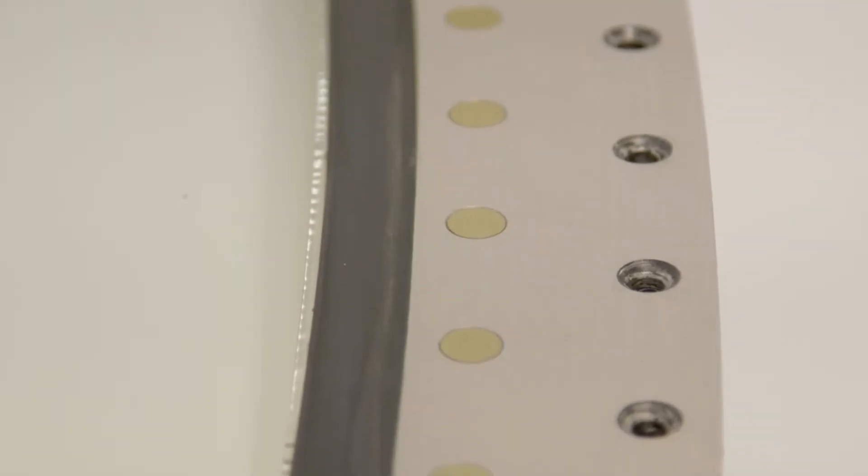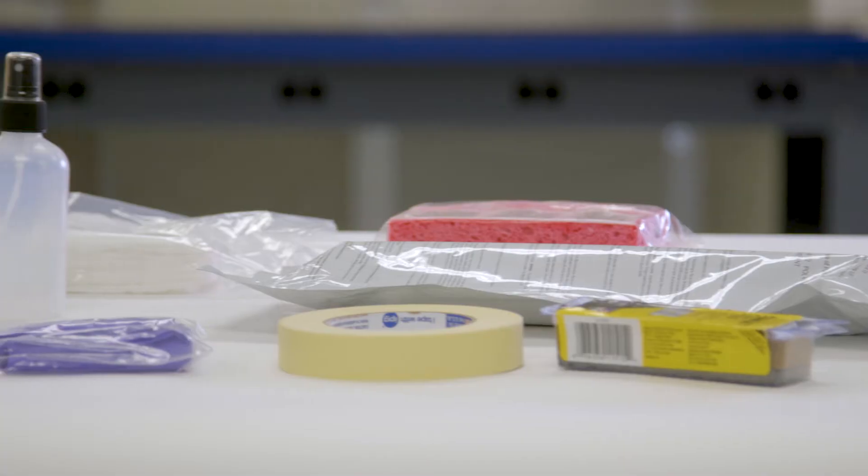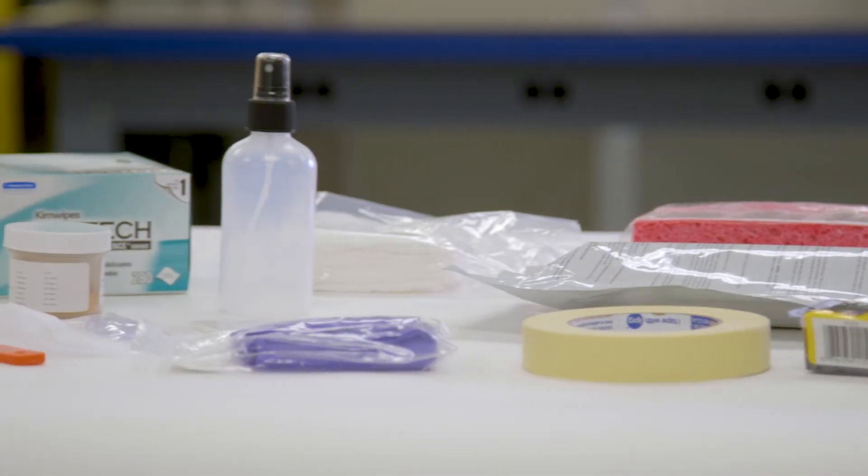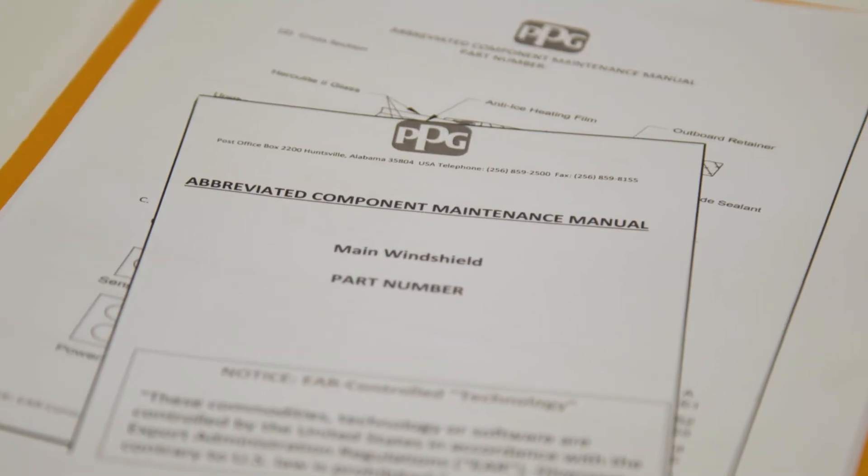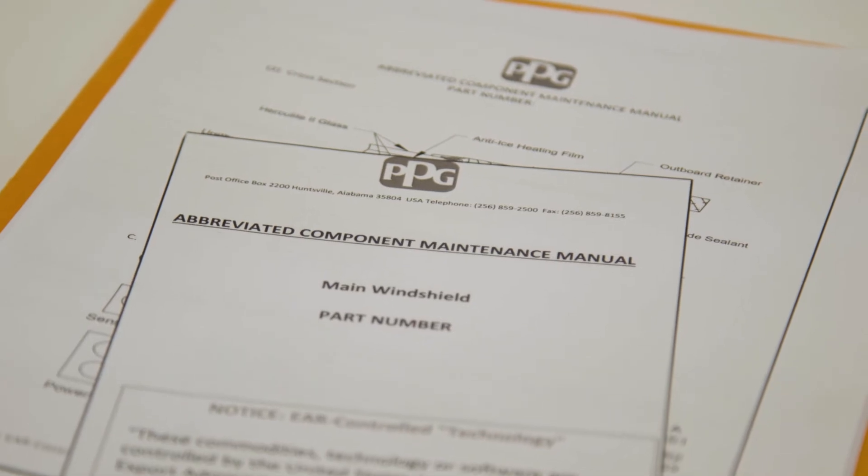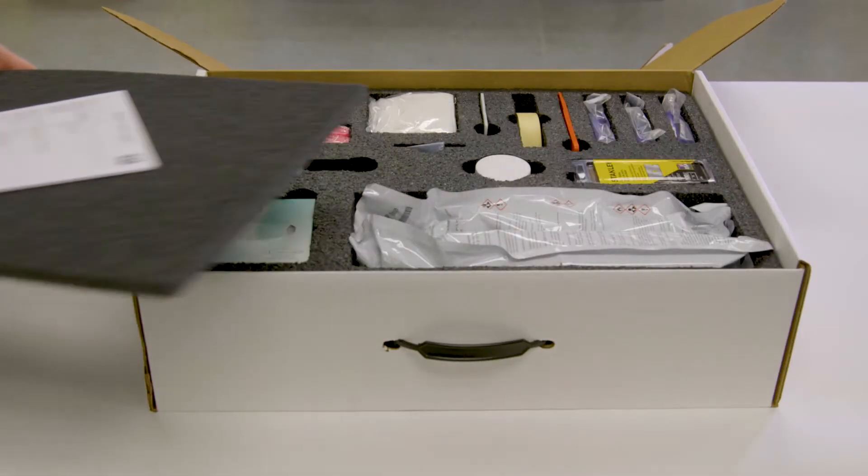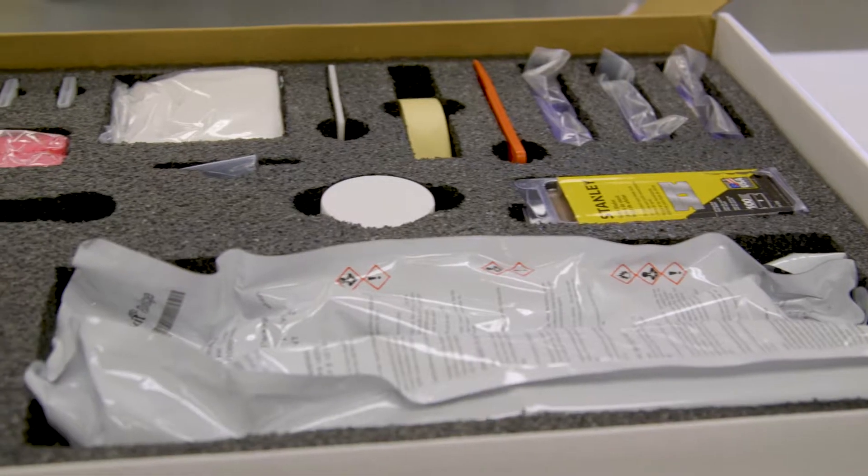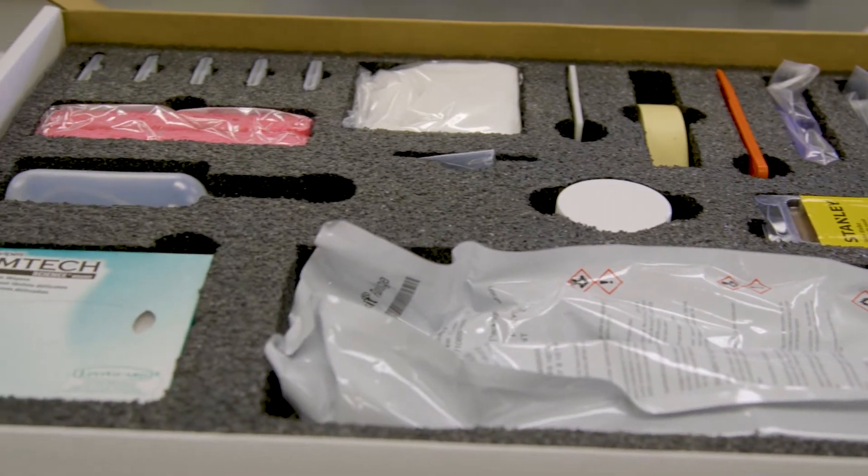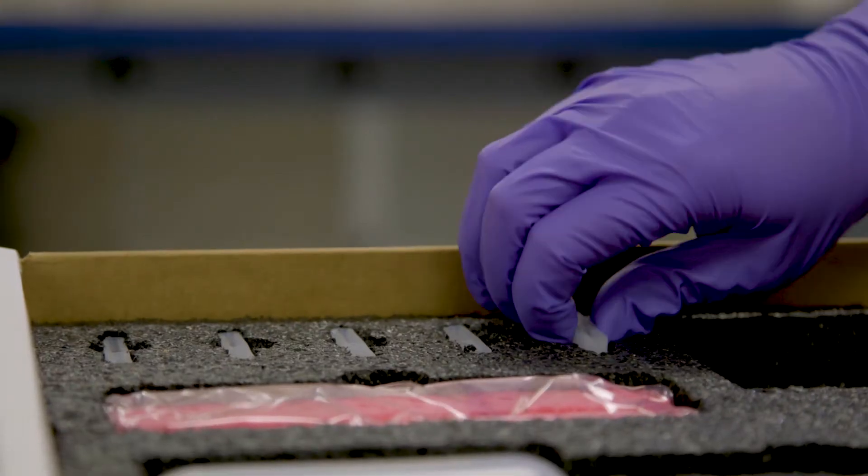To initiate repairs to any PPG windshield, you will need the appropriate kit contents called out in the Windshield Abbreviated Component Maintenance Manual, ACMM. For operators convenience, PPG offers a hump seal repair kit that contains all necessary materials to complete the repair.